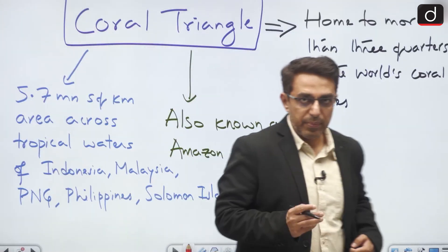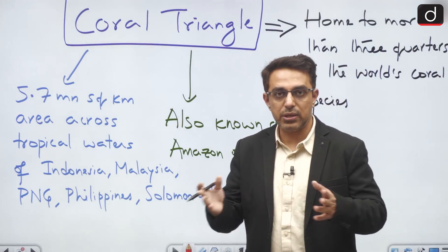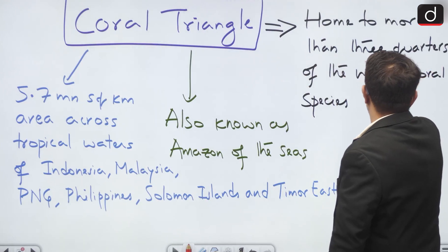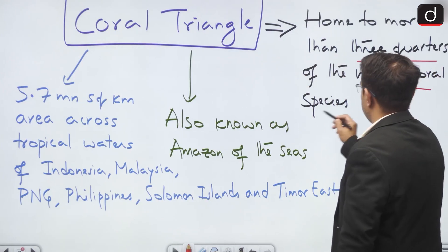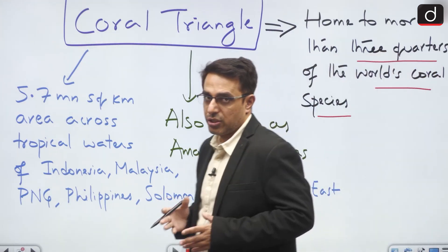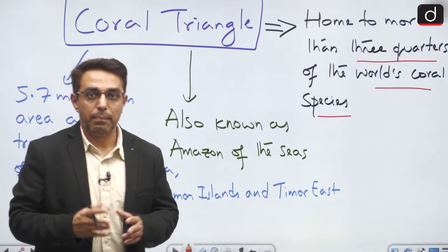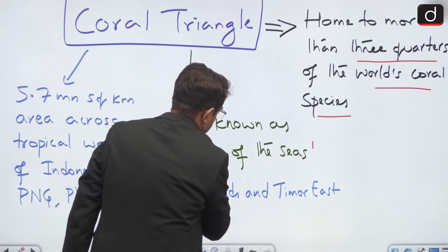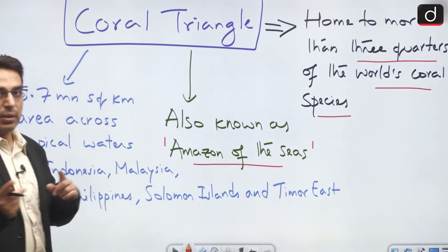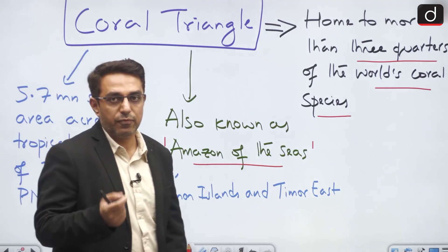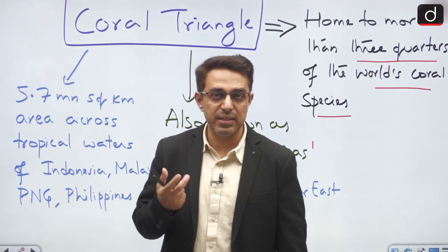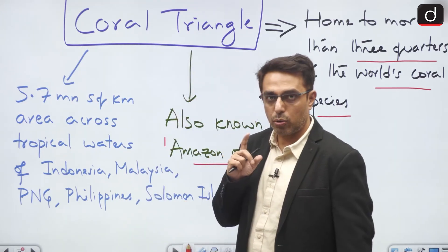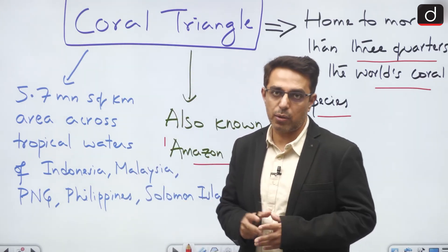This Coral Triangle — why is it famous, or why was it in news? It is home to more than three-quarters of the world's coral species, and it is so rich in marine biodiversity that it is also known as the Amazon of the seas. In an exam, a question can be asked: which place is known as the Amazon of the seas? The right answer would be Coral Triangle, and its location is in Southeast Asia.